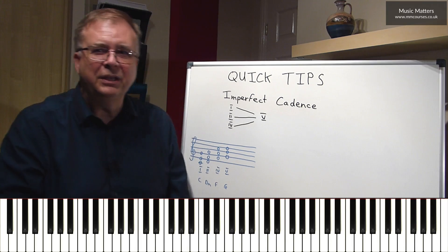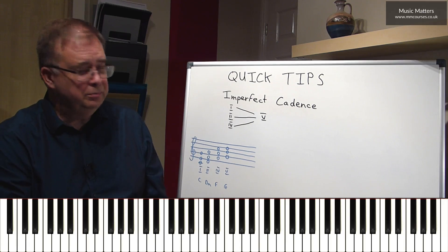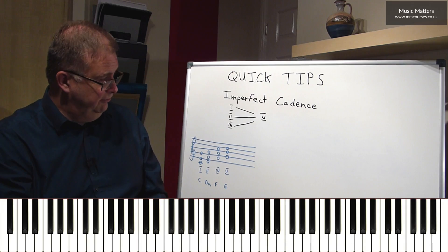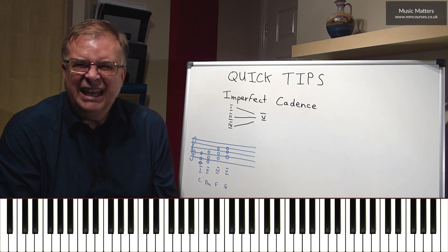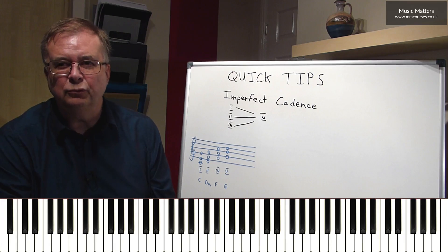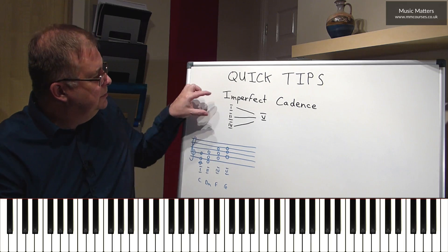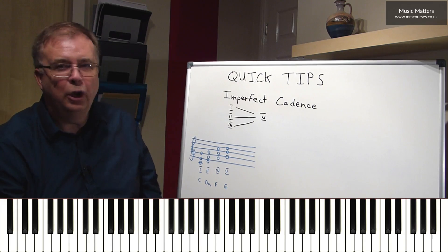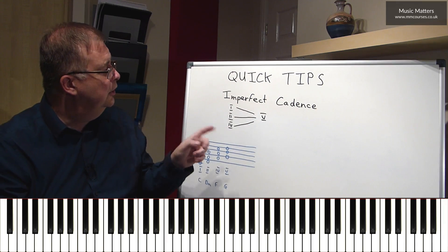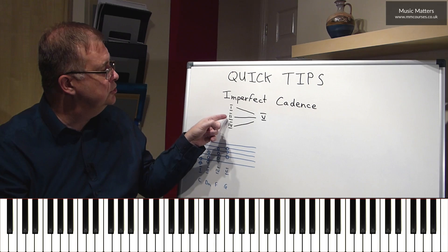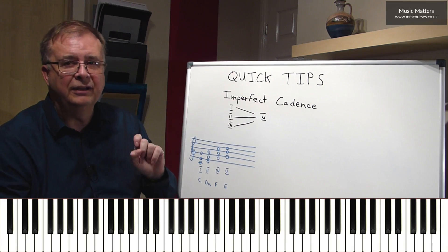So what's the recipe for an imperfect cadence? The important thing is that you must finish on chord V. Technically it could be anything to V, but in practice it tends to be one of three options: chord I to chord V, chord II to chord V, or chord IV to chord V.